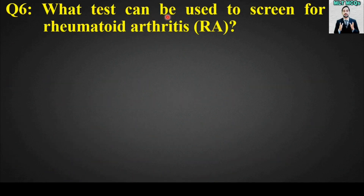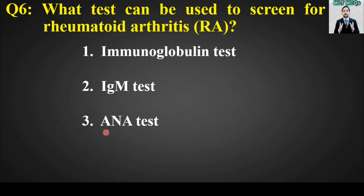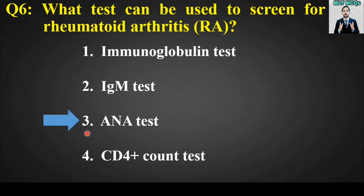MCQ number 6: What test can be used to screen for rheumatoid arthritis (RA)? Options are: immunoglobulin test, IgM test, ANA test, or CD4 count test. The right answer is option number 3 — the ANA test can be used to screen for rheumatoid arthritis.